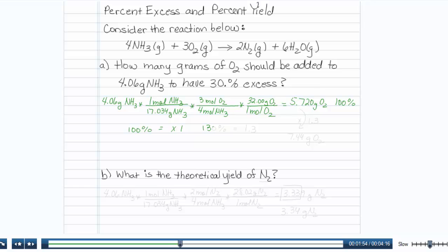The way I choose to do it is to say 100 percent is equal to a factor of 1. So 130 percent would be a factor of 1.3. So I'm just going to take my 5.72 grams and multiply it by 1.3. And it will turn out that I need 7.44 grams of O2.